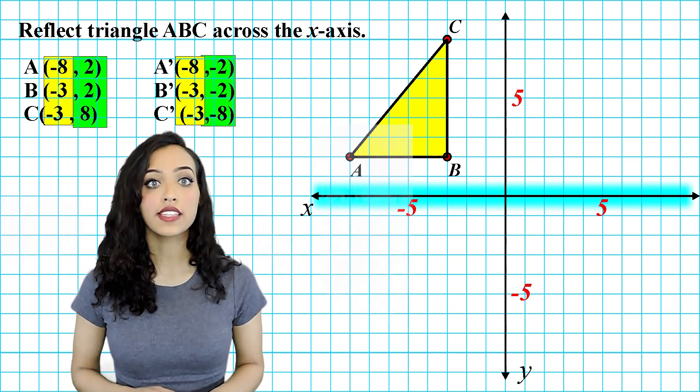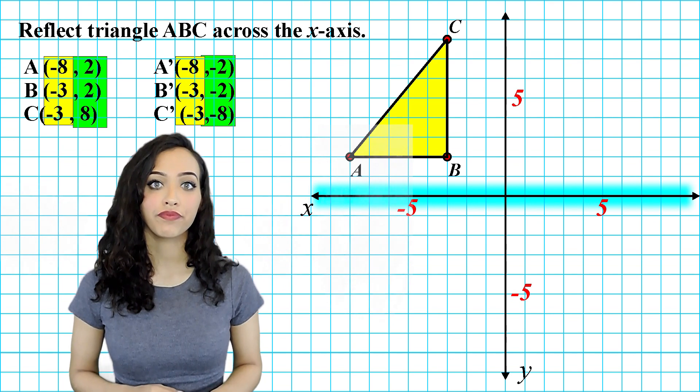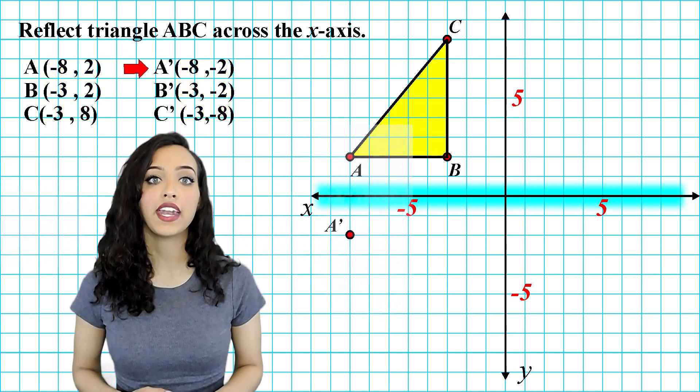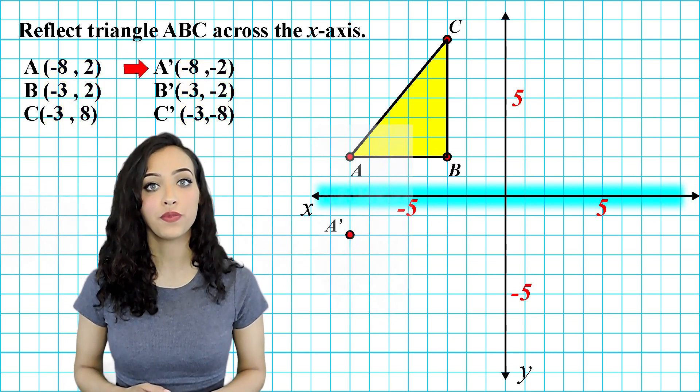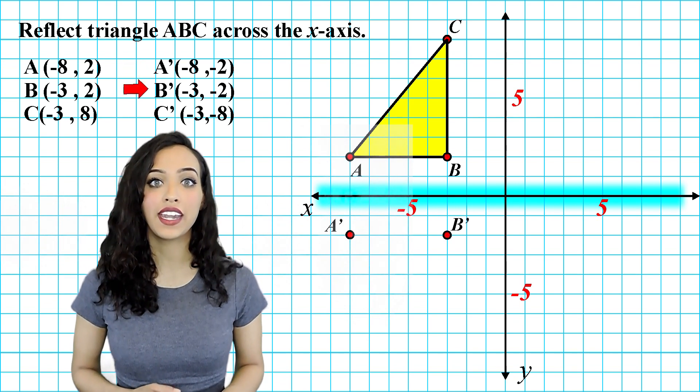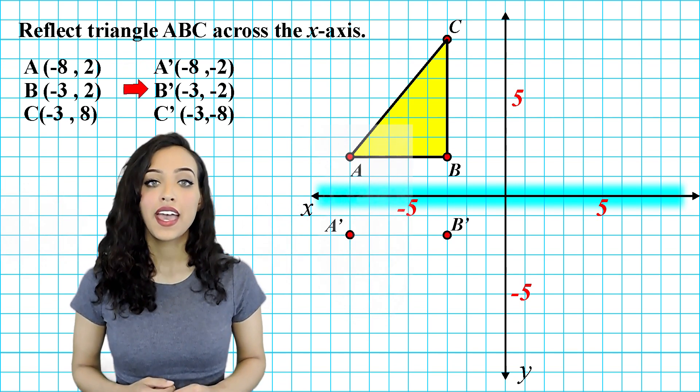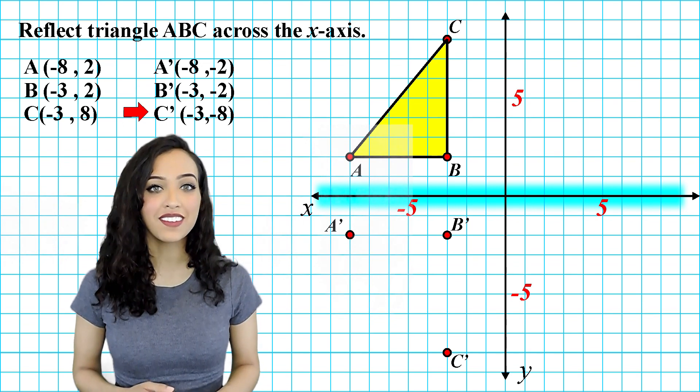Now that we have our new coordinates, let's go ahead and plot them. Point A is located at negative 8 negative 2, Point B is located at negative 3 negative 2, and Point C is located at negative 3 negative 8.